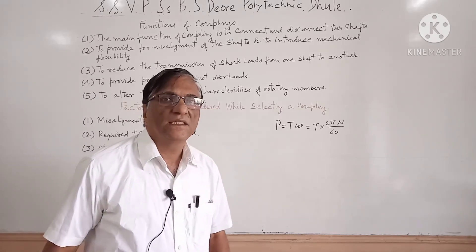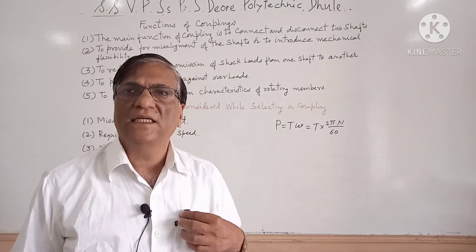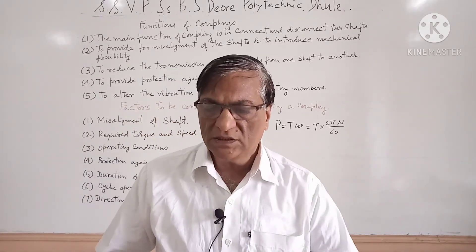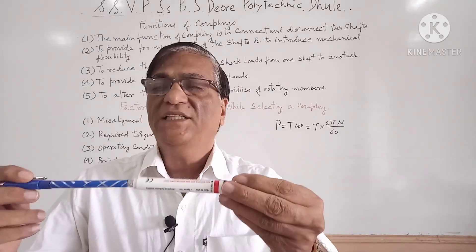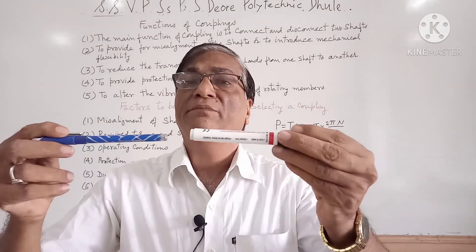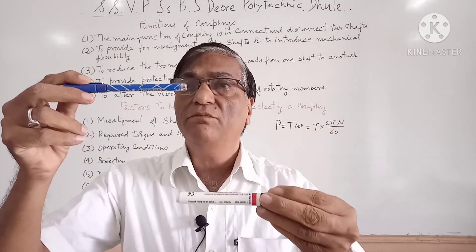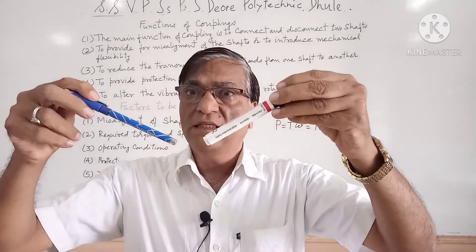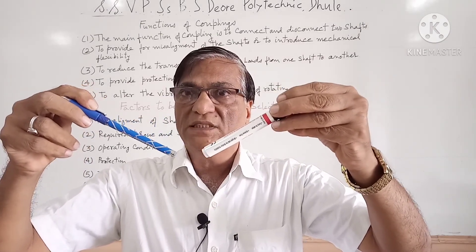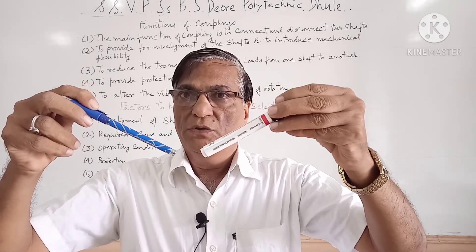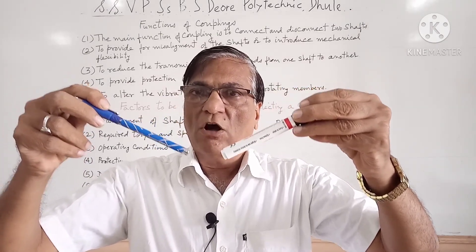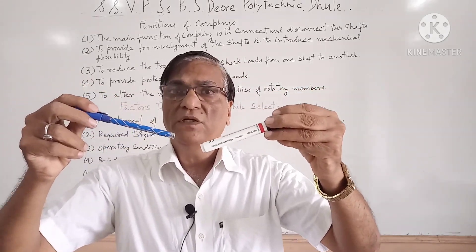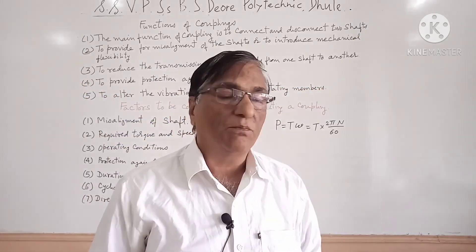There are three types of misalignments. First is axial misalignment. Second is lateral misalignment. And third is angular misalignment. In order to adjust these three types of misalignments, we use the coupling.